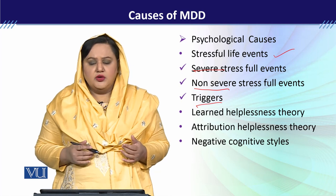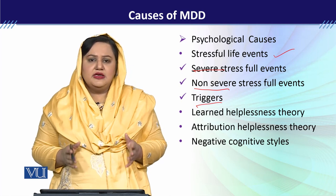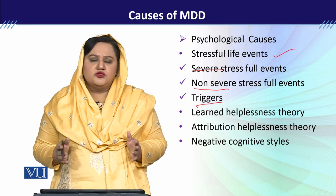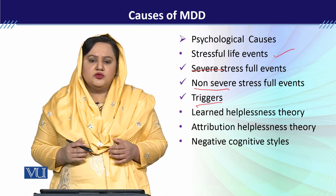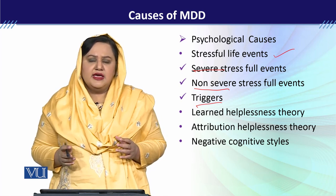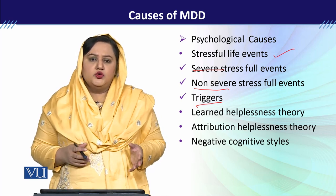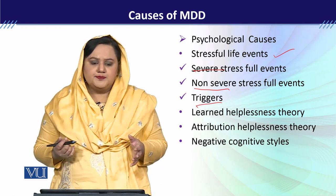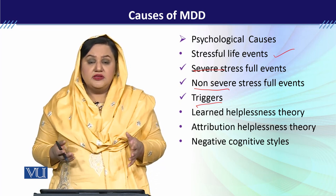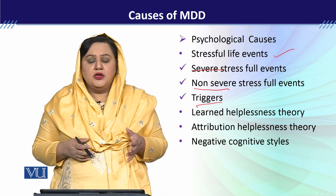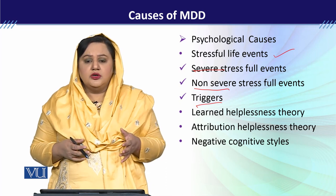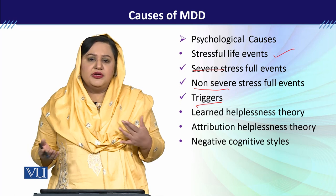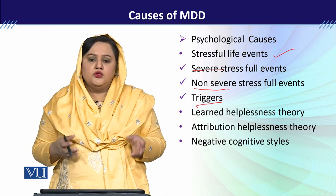Then we will talk about the Learned Helplessness theory, proposed by Seligman. He said that people with depression are unable to process the function of reward and punishment in their life.